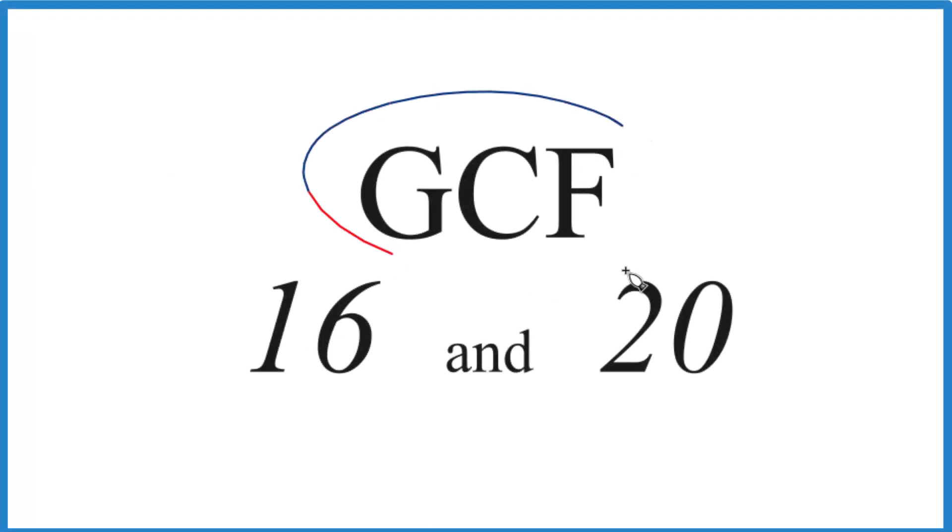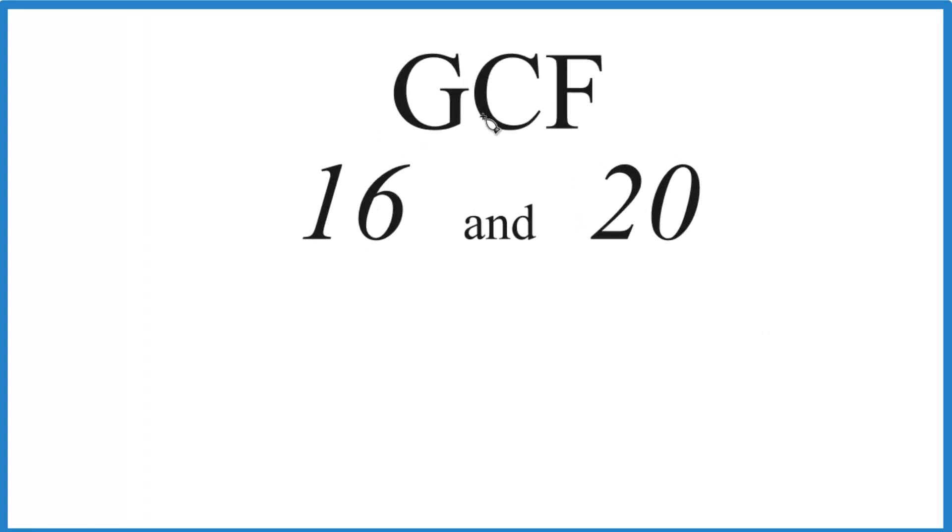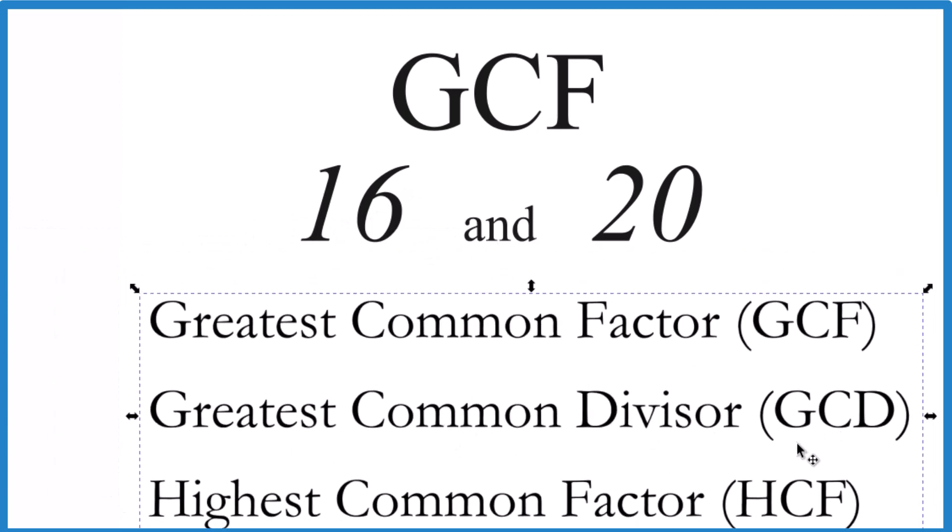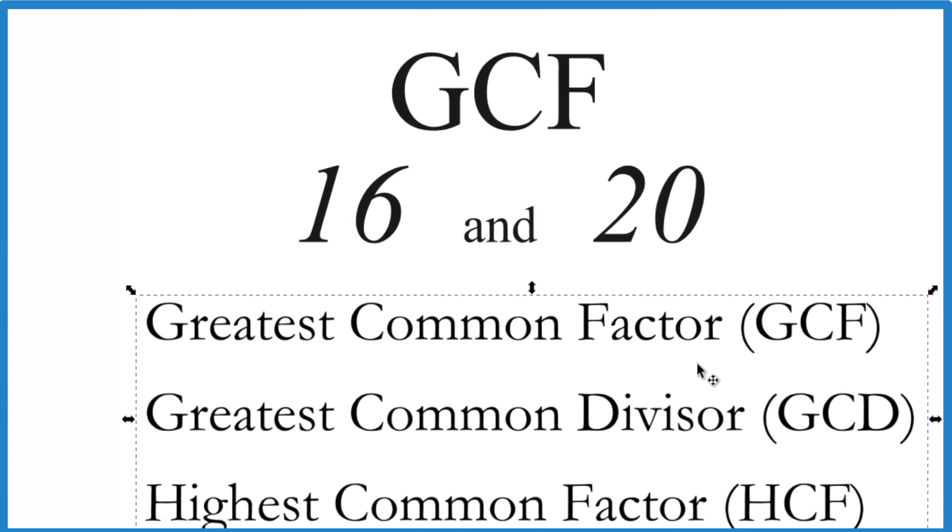So here's how we can find the greatest common factor for 16 and 20. We want to find a number that goes into 16 and 20 evenly, and we're looking for the greatest number, the greatest common factor. You might see the greatest common factor called the greatest common divisor or the highest common factor. These are the same thing.